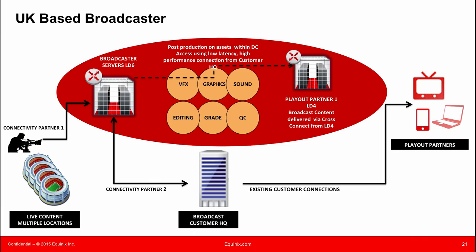Another example is a UK-based broadcaster doing live football — soccer — games. They're taking all these various game feeds in and have an SLA to get over 30 games done in four hours, creating highlight reels and getting them out to their content providers. They take the content in on the left-hand side of the diagram into one of our data centers in London. Their HQ then accesses that data in our location and does all the VFX, graphics, etc. The content stays there and is worked on remotely by folks over a high-performance network. Once complete, that workflow continues within the same environment over to playout partners on the right-hand side — some of whom are actually within the Equinix facility, so it's across the floor or across the street, while others connect out via network connections. This looks very similar to that diagram I brought up earlier in terms of keeping content in one place and having people work on it remotely.